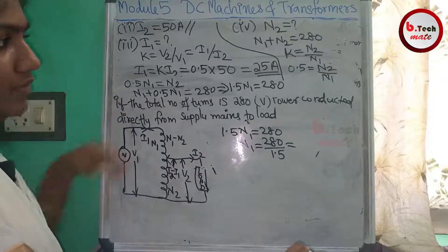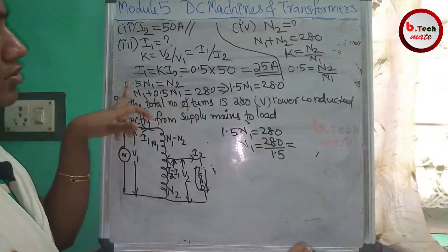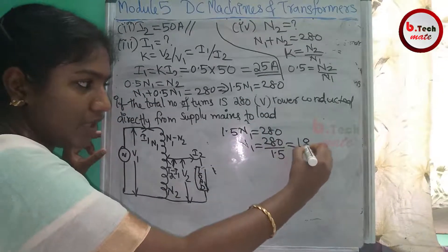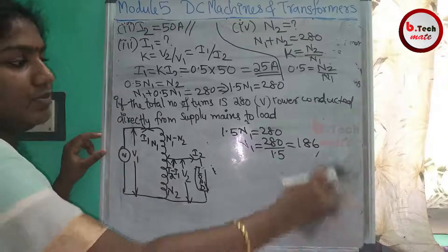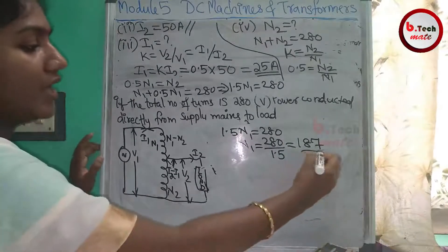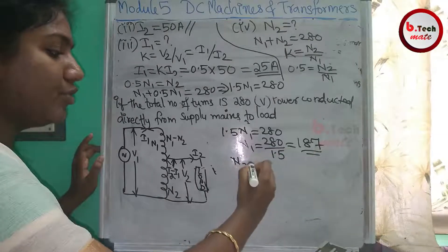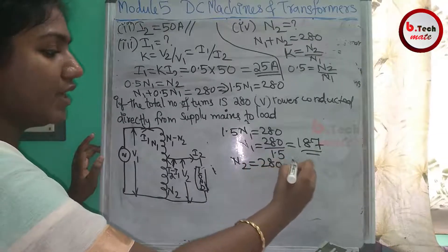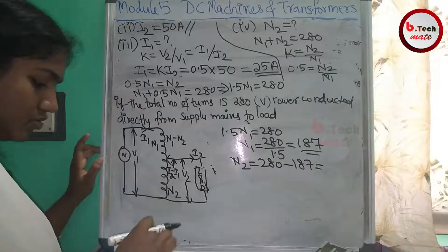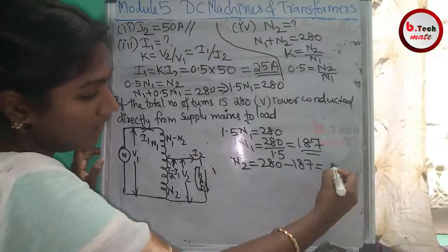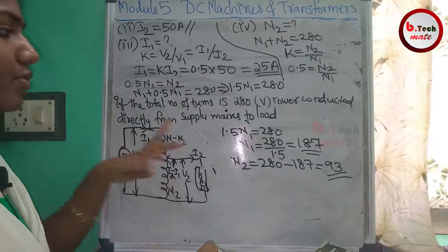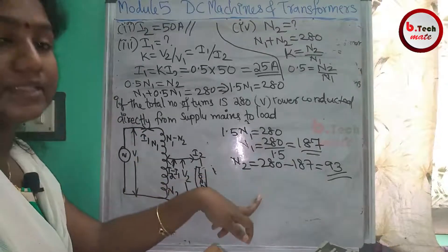N2 = 0.5 × N1. Rounding N1 to 187, we get N2 = 0.5 × 187, which equals approximately 93 turns.